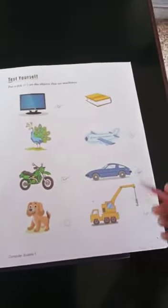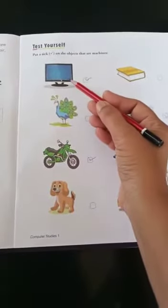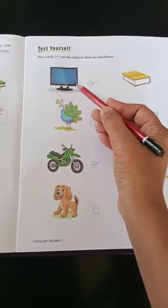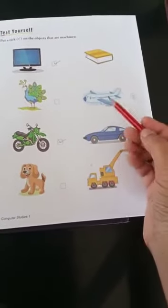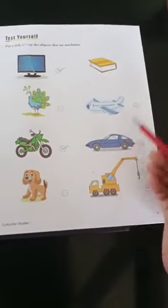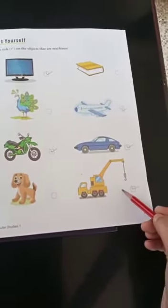So in this page, which are all machines? Television is a machine. Motorbike is a machine. Aeroplane is a machine. Car is a machine. And the crane is a machine.